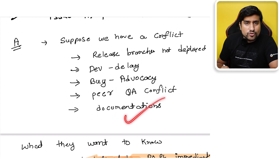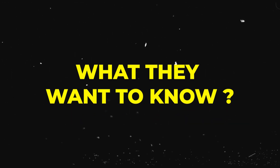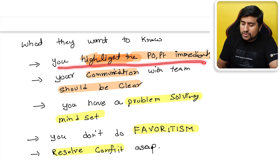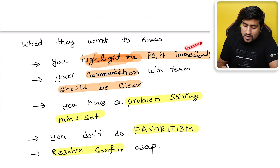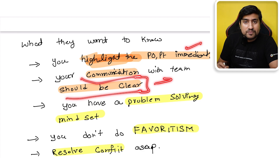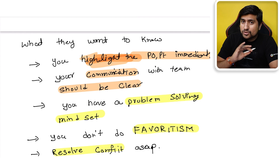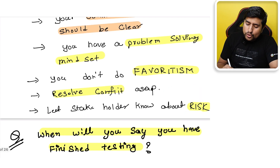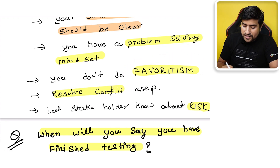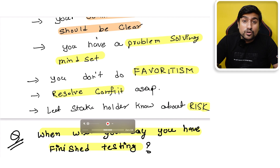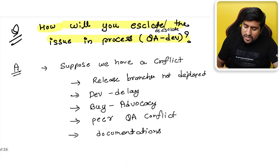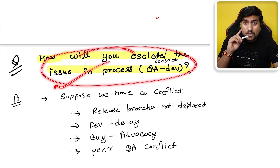What they want to know is: do you highlight P0s and P1s immediately on a Slack channel or email, do you communicate clearly so everyone knows what needs to be done, and do you have a problem-solving mindset? Instead of questioning the problem, you solve it. You don't show favoritism toward developers, you resolve conflicts as soon as possible, and you inform stakeholders of any risks.